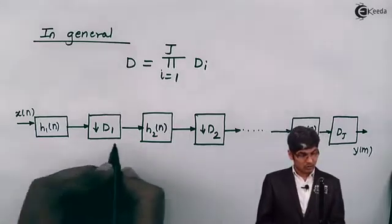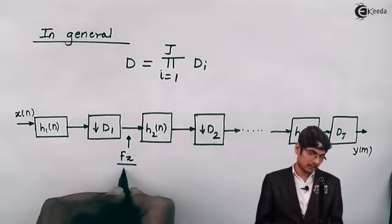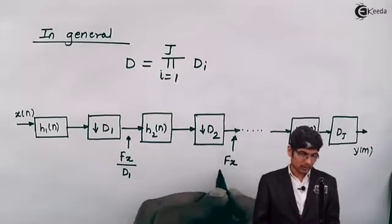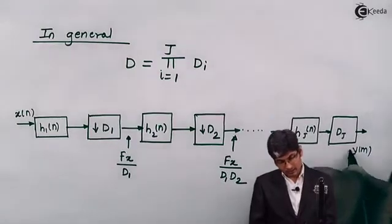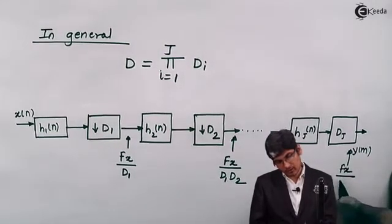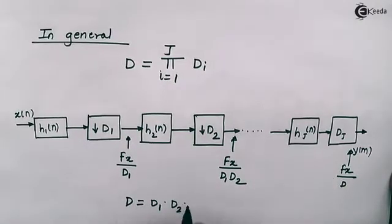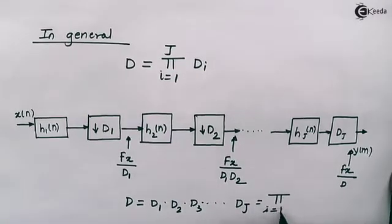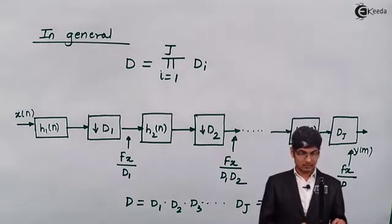So after stage 1 the sampling rate is divided by d1. After stage 2 it is divided by d1×d2. Finally the output frequency is fx divided by D, where D = d1×d2×...×dJ, also written as the product from i=1 to J of d_i. This is how the general multi-stage decimation looks.